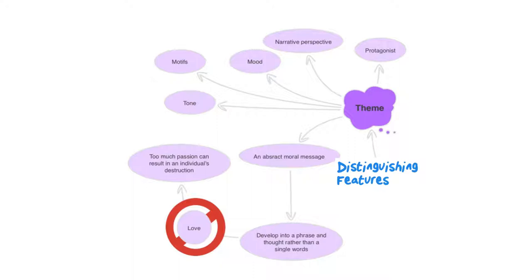And the last of our four characteristics is a theme. And this is really where the abstract moral message that the writer is trying to convey. When you write about a theme, try to write, try to really develop what is the theme of the text into a phrase or a thought, rather than just a single word. So if you're saying, oh, the theme of this text is love, that's really quite flat, and it doesn't really say much at all. Because love can be so many things. So it's much better to then develop that into a phrase, such as, for instance, too much passion can result in an individual's destruction. That way you're actually saying something very clearly about love. Or you can say that love has the power to conquer all, or whatever the aspect of love is that you think the text is exploring. So you're really delving into the thematic exploration further.